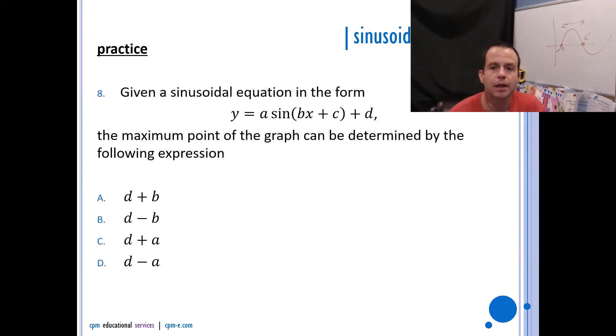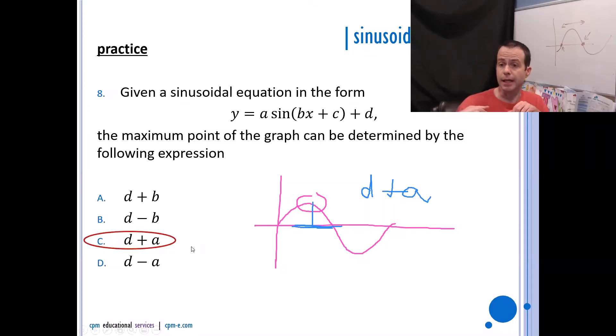All right, given a sinusoidal equation in the form y equals a sin(bx + c) + d, the maximum point—okay, so here's what I want you to understand from a visual perspective. If I gave you a sinusoidal curve, that maximum point right here, you would have to take whatever the median value is and you'd have to add the amplitude. So you take the median value, which is d, and I add the amplitude. That's going to get me to my max. So it'll be d + a. Coincidentally, d - a would have gotten me to my minimum.